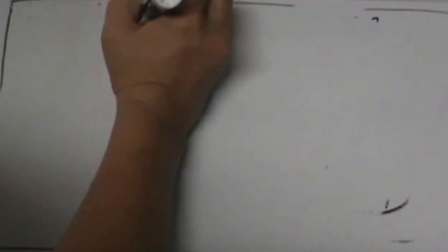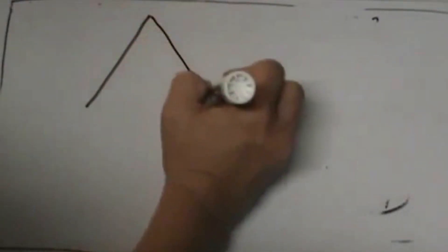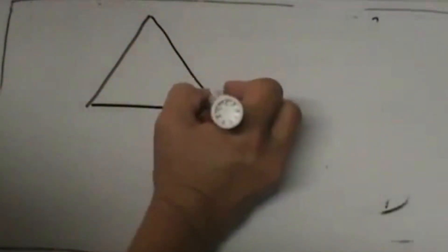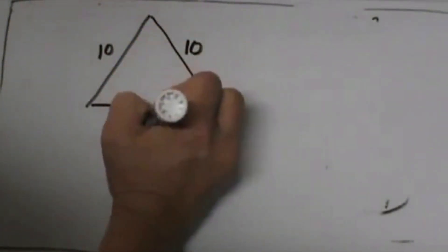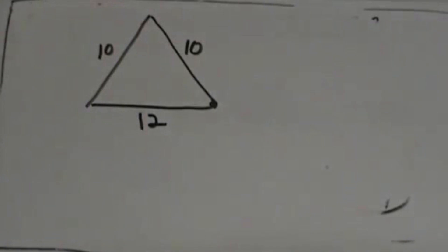Now let's look at finding the area of an isosceles triangle. We have two sides that are 10 and one side that is 12. We need to find the area of the triangle.